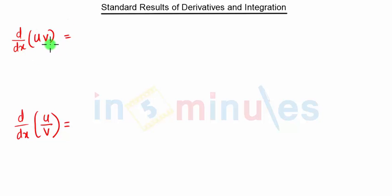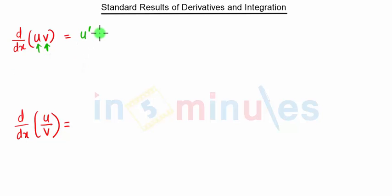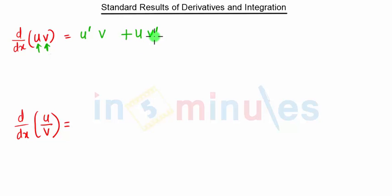Whenever we have the multiplication of two terms and we have to take the derivative of those two terms, we follow the u·v rule. The u·v rule states that we first take the derivative of u and keep v as it is, plus we keep u as it is and then take the derivative of v.